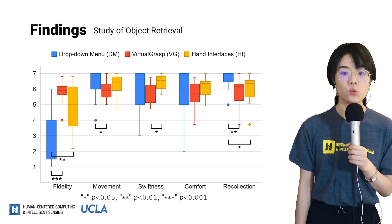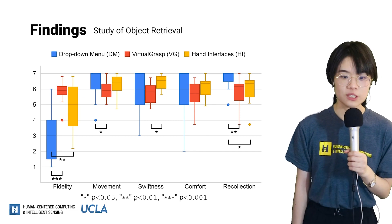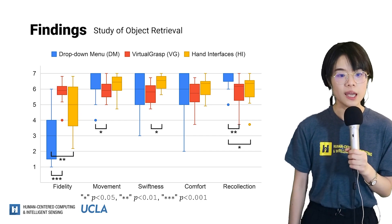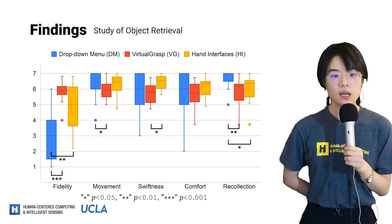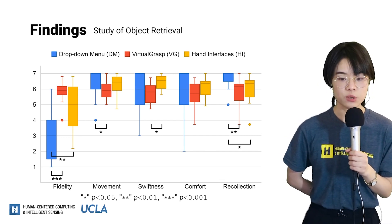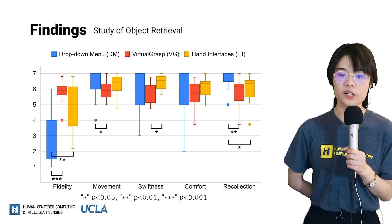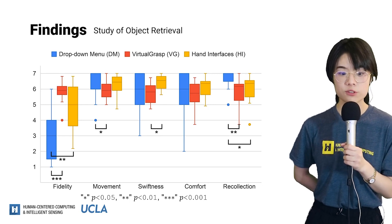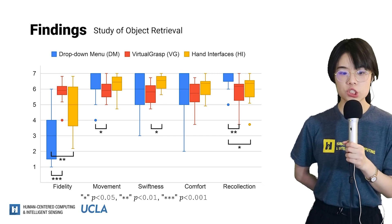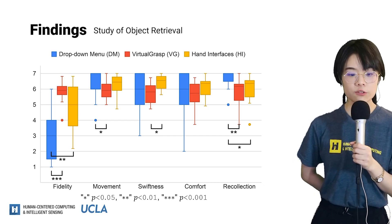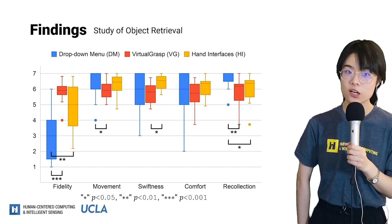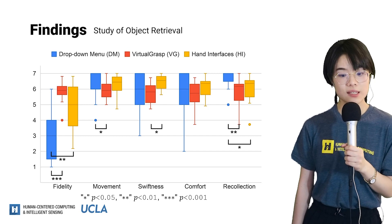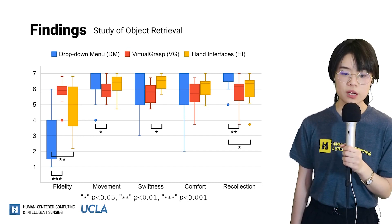In the results figure, one indicates strongly disagree and seven indicates strongly agree. Fidelity refers to the degree to which the interaction technique provided feedback similar to retrieving the object in reality — hand interfaces are significantly more realistic than the drop-down menu. Freedom of movement shows hand interfaces support comparably free movement as the drop-down menu. Hand interfaces also allow users to retrieve objects more quickly than with grasping gestures. Comfort of retrieval showed no significant difference among techniques. For ease of recollection, the drop-down menu shows its innate advantage.